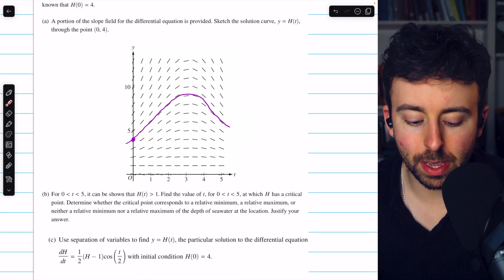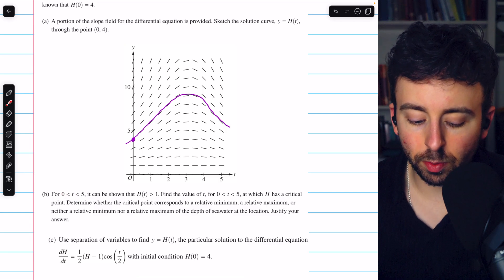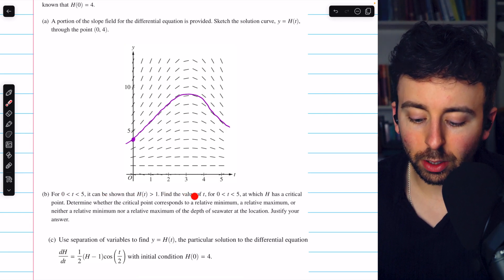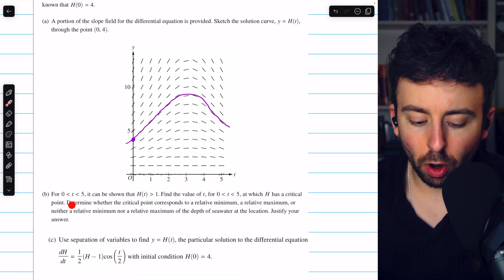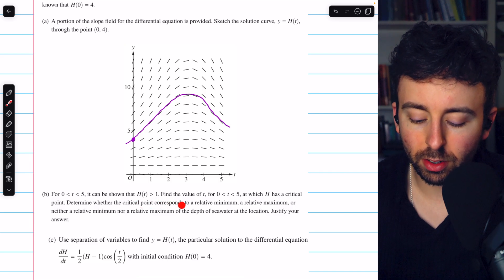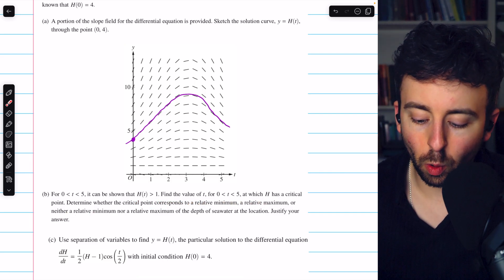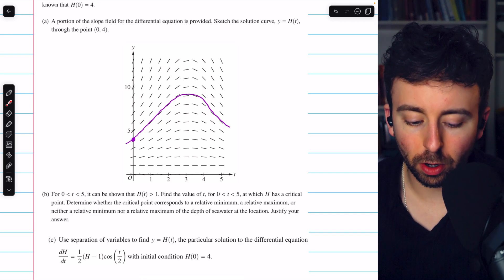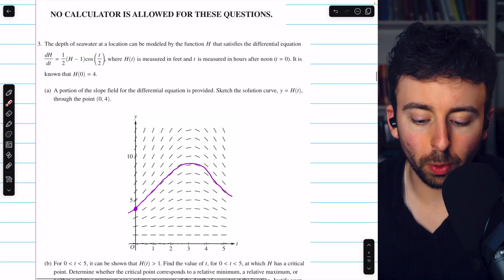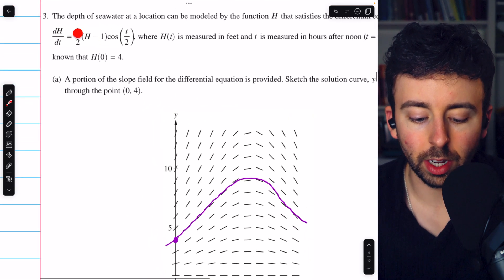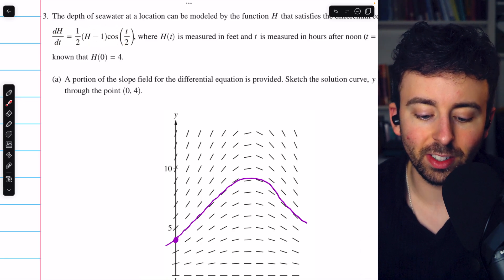Moving on to part B. For t between zero and five, it can be shown that h(t) is greater than one. Find the value of t between zero and five at which h has a critical point. Determine whether the critical point corresponds to a relative minimum, a relative maximum, or neither. And of course, we must justify our answer. In looking for critical points, we consult the derivative, which is given to us, dh/dt.